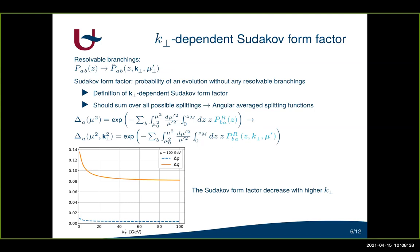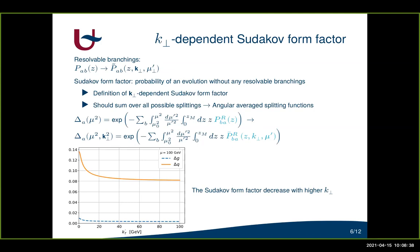On this figure I show the TMD Sudakov form factor versus the transverse momentum at a fixed scale mu = 100 GeV. The value at k_T = 0 corresponds to the collinear Sudakov form factor, and we see that both the gluon Sudakov form factor (blue dashed line) and the quark Sudakov form factor decrease with increasing transverse momentum.